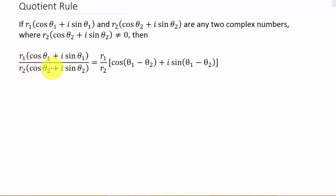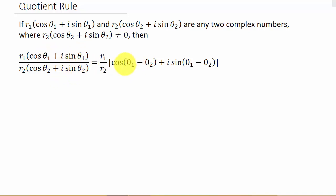So if we want to divide the two complex numbers, then it's R1 over R2 times the cosine of theta 1 minus theta 2. Theta 1 is in the complex number in the numerator, theta 2 is in the complex number in the denominator. So it's cosine of theta 1 minus theta 2 plus i times sine of theta 1 minus theta 2.